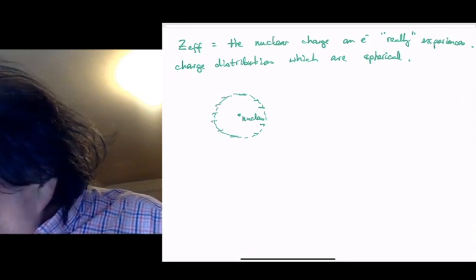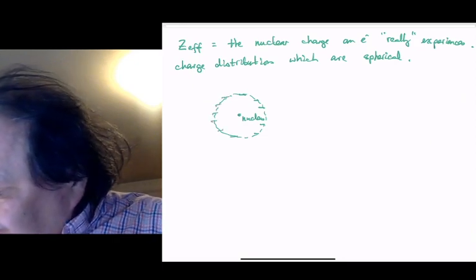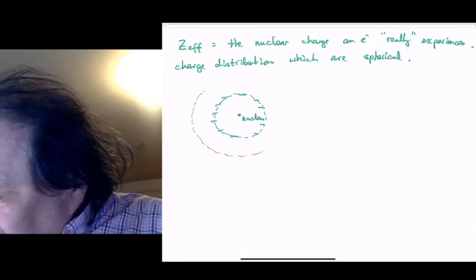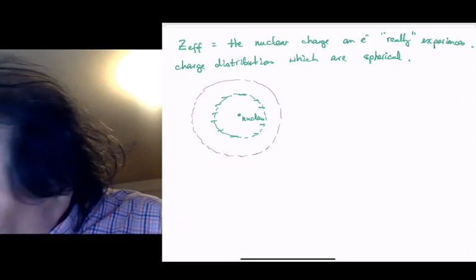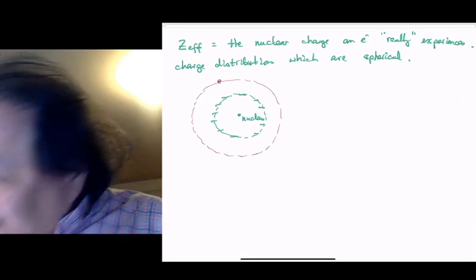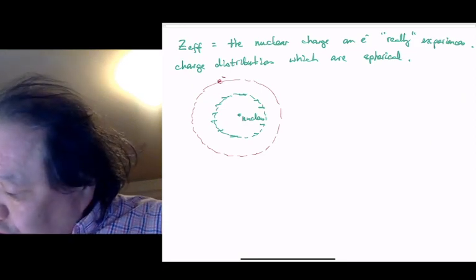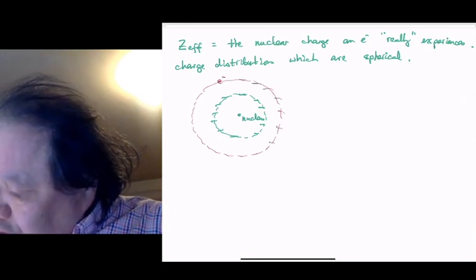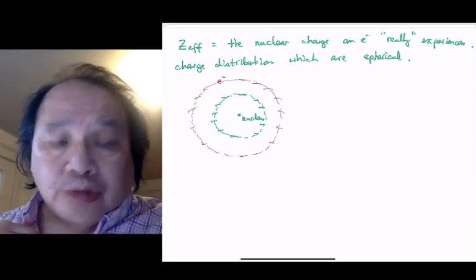Then I have another electron forming some kind of spherical charge, but it's outside. These electrons are outside and also spherically distributed.